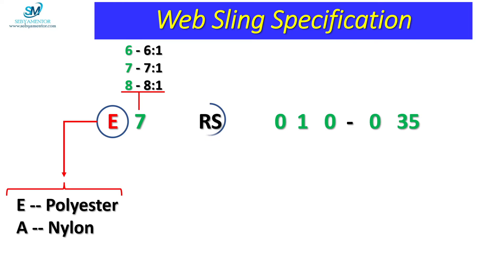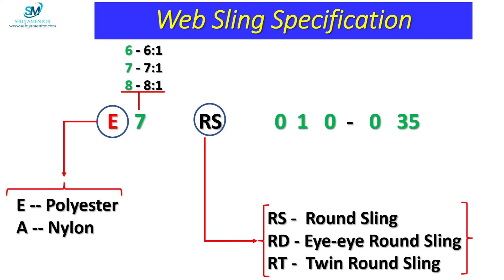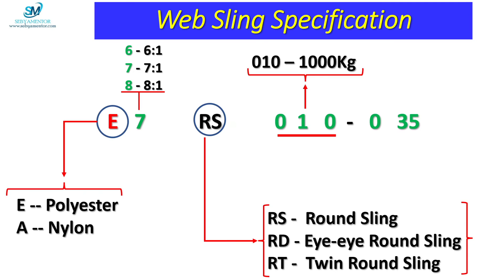The couple of alphabets indicates about the type of sling. If it is written as RS, it means the web sling is round sling type. If it is written as RD, it means the web sling is eye-to-eye round sling type. And if it is written as RT, it means the web sling is twin round type sling. The digits S010 indicate about the web sling capacity — 010 means the web sling has a lifting capacity of 1000 kg, that is 1 ton. The final figure shown as 035 indicates the length of the web sling; 035 means the length is 3.5 meters.